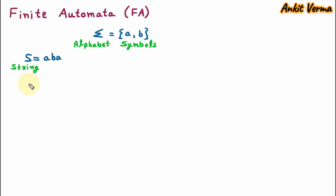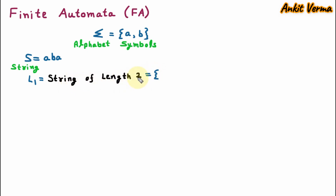Now we are going to generate some language. Let's say the first language is L1 and that is the set of all strings of length 2. From the given alphabet we are generating strings, and the string combinations create the language. So in L1 we have strings of length 2 — from symbols a and b we create aa, ab, ba, and bb. So these four strings of length 2 are the limited strings, making this a finite language.